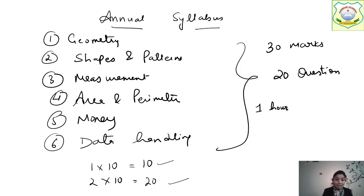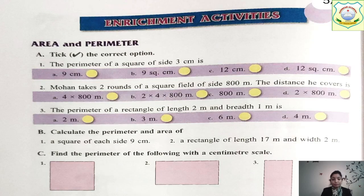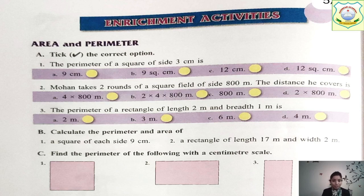So now let's start today's work. Everyone open page number 222. Here you can see the enrichment activity of Area and Perimeter. The first question is: